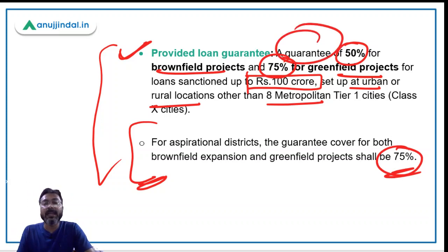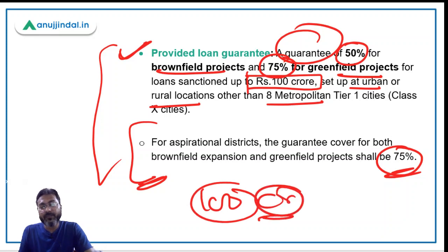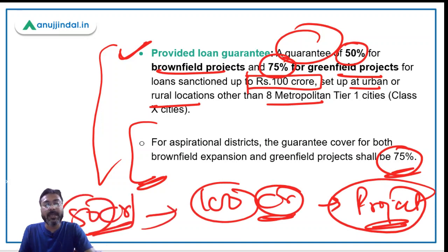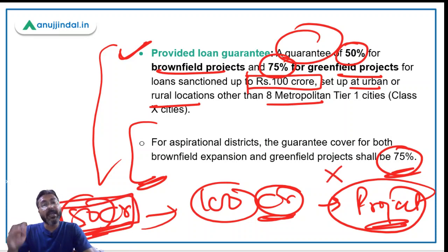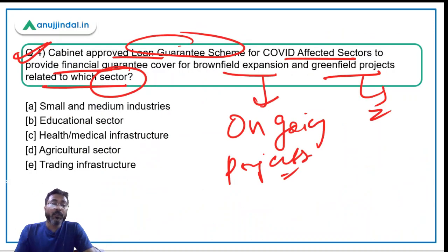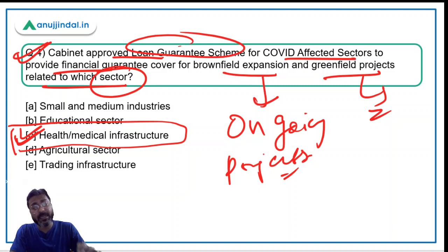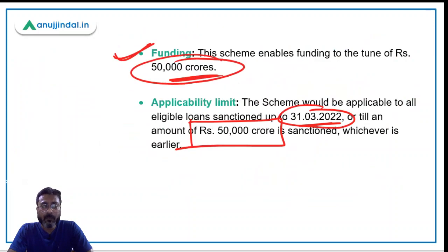To explain loan guarantees: if a Rs. 100 crore loan is provided to a project and that project fails, the government of India will return Rs. 50 crores to the bank. This is the meaning of the loan guarantee. The correct answer is Option C — health or medical infrastructure — as this scheme was launched to revive health and medical infrastructure by providing financial assistance through loan guarantees.